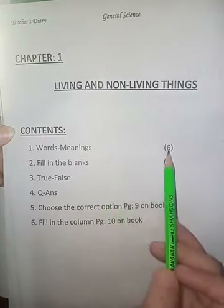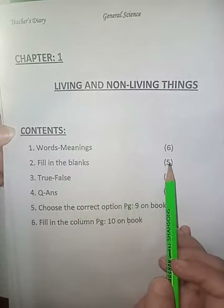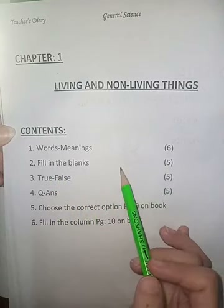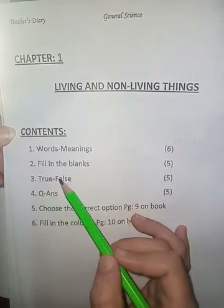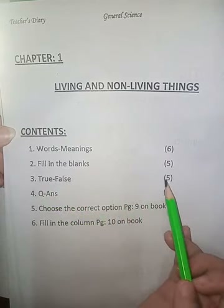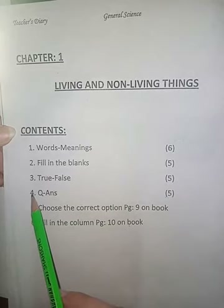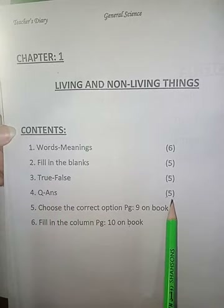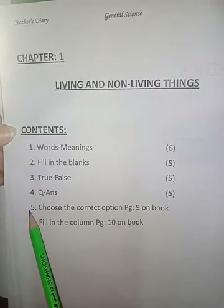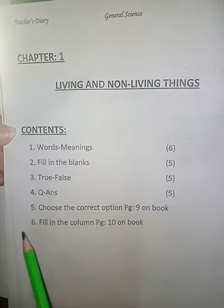Contents: number one is Words Meanings — there are six, so write six. Number two Fill in the Blanks — five. Number three True/False — five. Number four Question Answers — five. Number five Choose the Correct Option, page 9 in the book. Number six Fill in the Column, page 10 in the book.